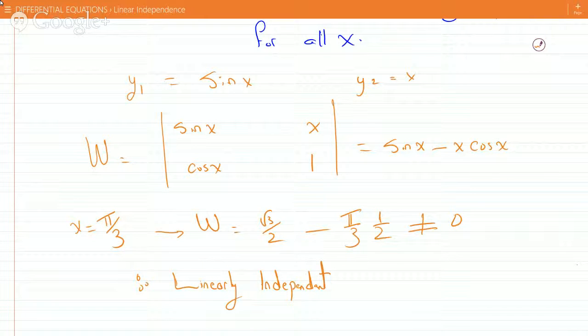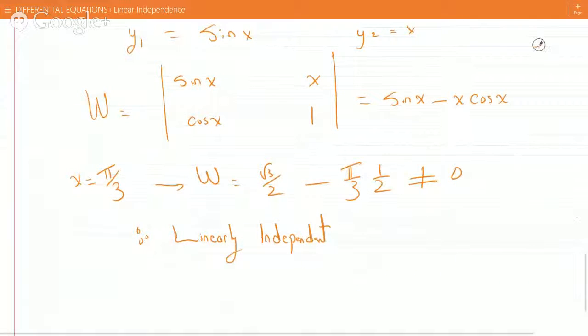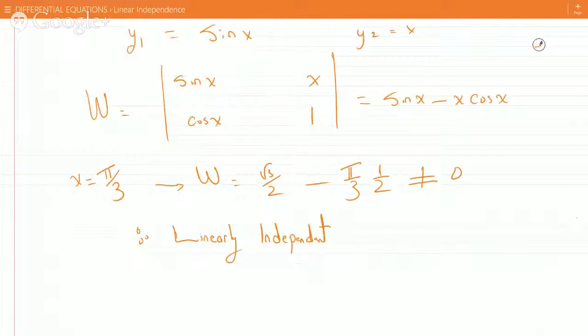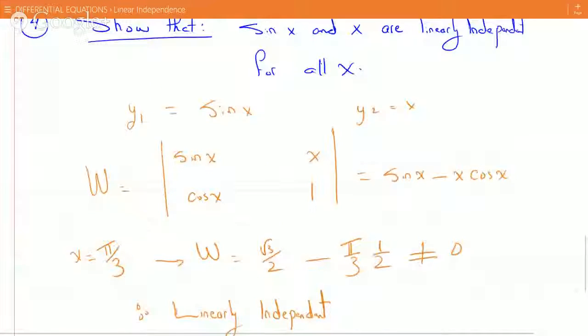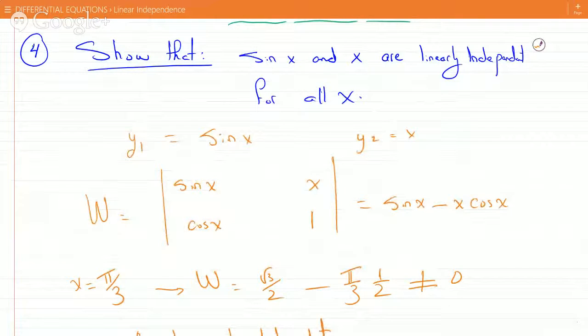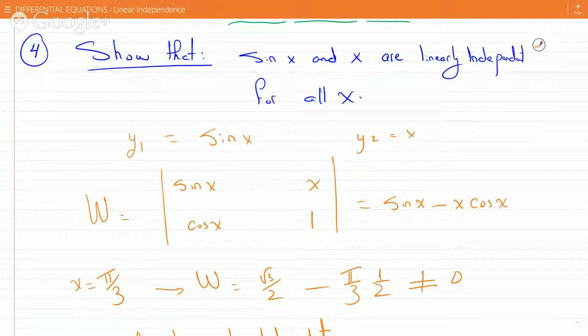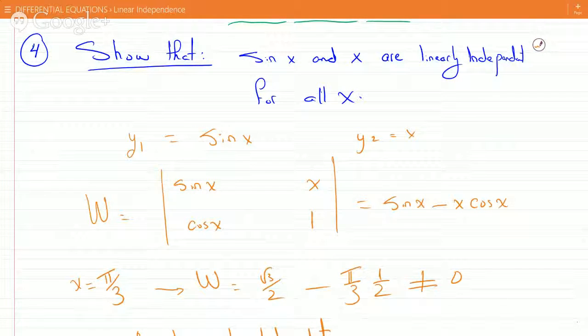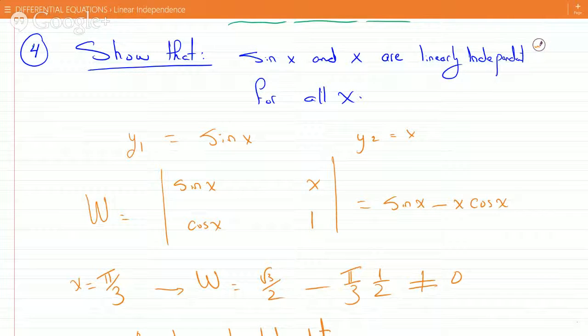Now, notice that the only value that would make the Wronskian equal zero is if x is zero. Because if x is zero, you would get sine zero, which is zero, minus zero. But that's a fairly trivial case, because if x is zero, that just means y2 is zero and y1 is zero. So this is kind of a redundant way of saying that zero and zero are linearly dependent.